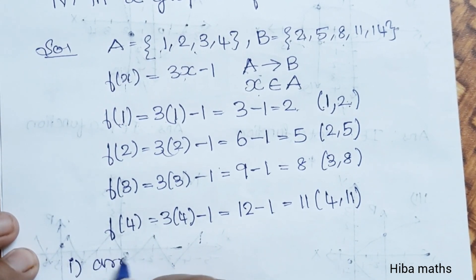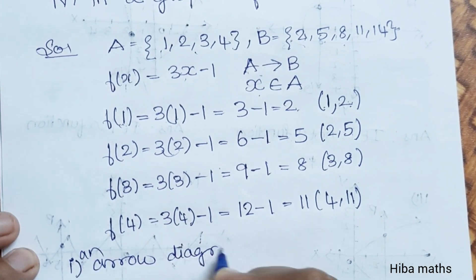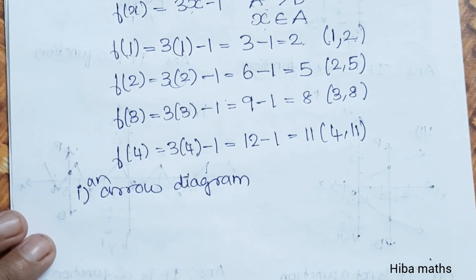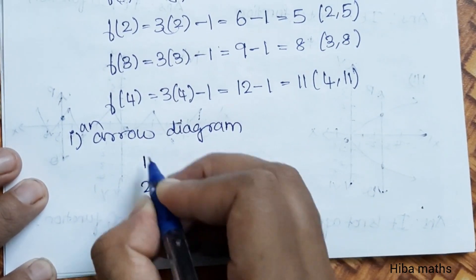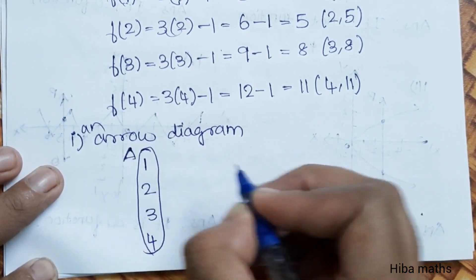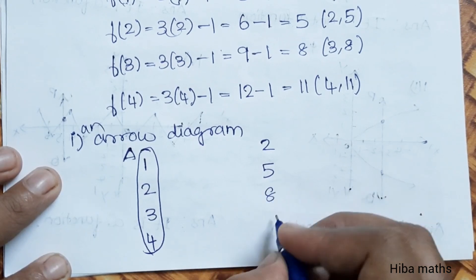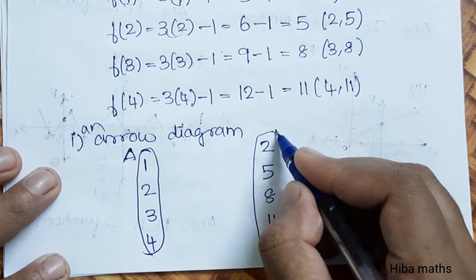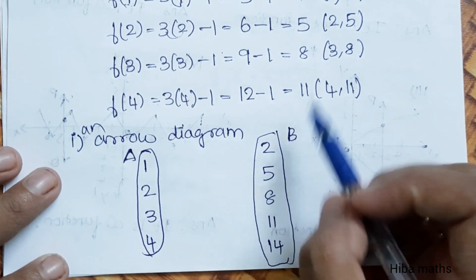First, let's do the arrow diagram. Now we know how to draw the arrow diagram. Set A contains 1, 2, 3, 4 on one side, and set B contains 2, 5, 8, 11, 14 on the other side.